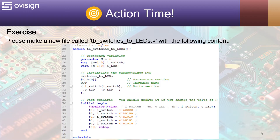Now please make a new file called TBSwitchesToLEDs.v with the following content. We first declare the timescale. After this we have the testbench which is also a module. Next we declare our testbench variables. We have first a parameter, next the ISwitch variable, and the OLED variable. These are going to be connected with our design when we instantiate it.